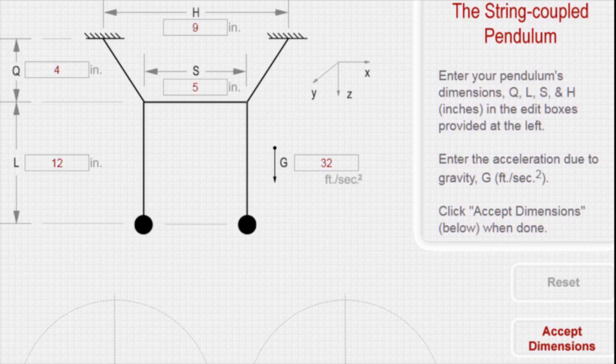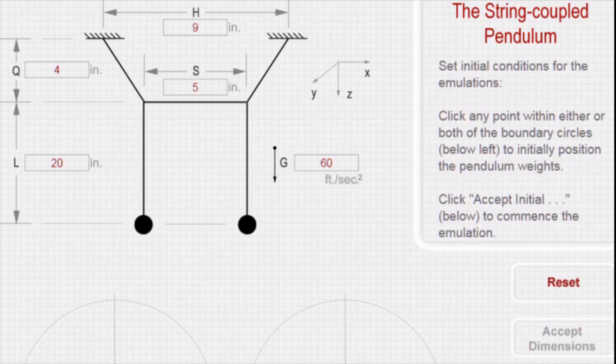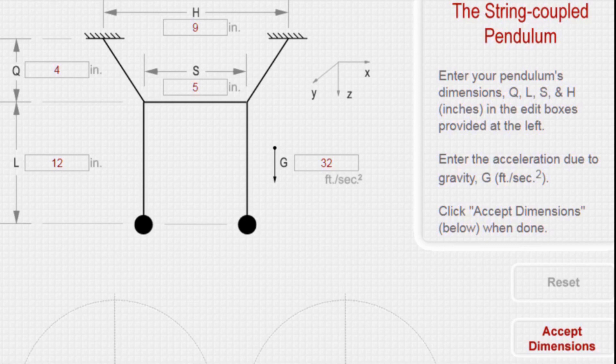For example, your pendulum might have an l dimension of 20 rather than 12, and you might wish to see how this pendulum would behave on Jupiter. After entering parameters for the pendulum you wish to investigate, click on the Accept Dimensions button. Once your dimensions are accepted, you always have the option of resetting the whole system back to the sample dimensions present when the program loads.